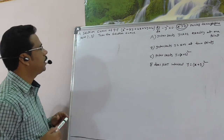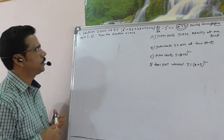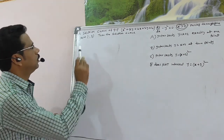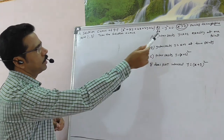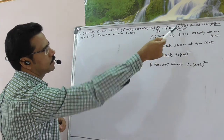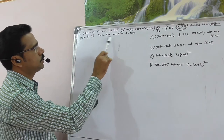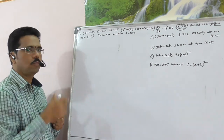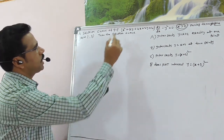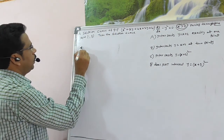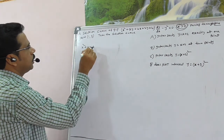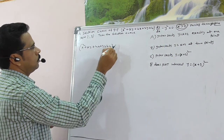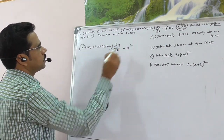This question is from JEE Advanced 2016, Paper 1 — one or more than one option type. A solution curve of the given differential equation, with condition x > 0, passes through (1, 3). We have to check all the given options. The given DE is: (x² + xy + 4x + 2y + 4) dy/dx = y².